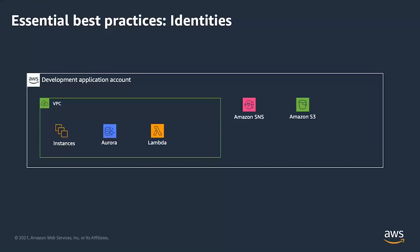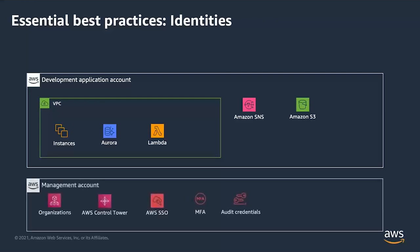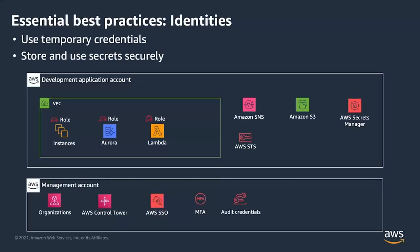With temporary credentials, we use STS and Secrets Manager. Roles attached to EC2 instances, RDS Aurora, and Lambda functions enable ephemeral tokens from STS — the Security Token Service. This means we don't hard-code any access and secret keys or credentials in our code. We want to stick to using temporary or ephemeral credentials rather than long-lived static credentials.